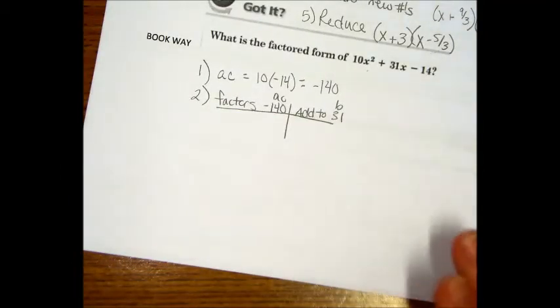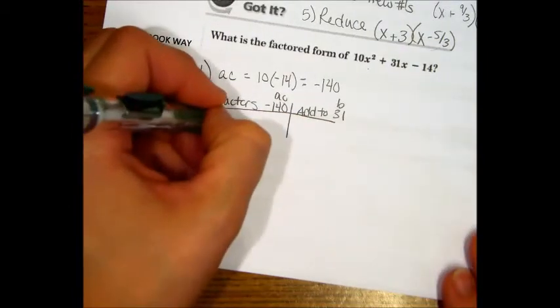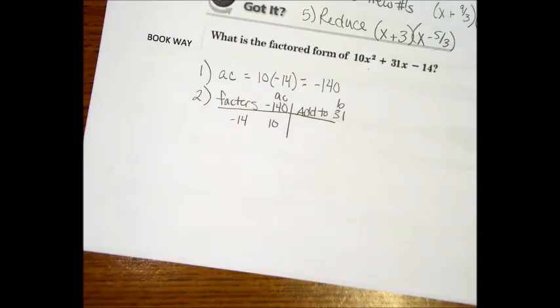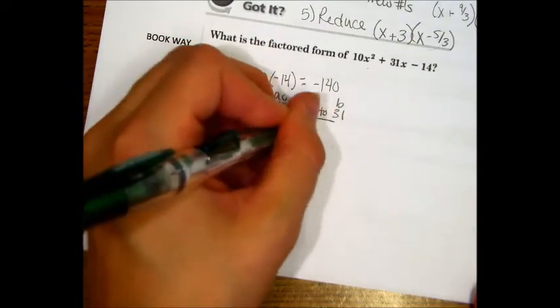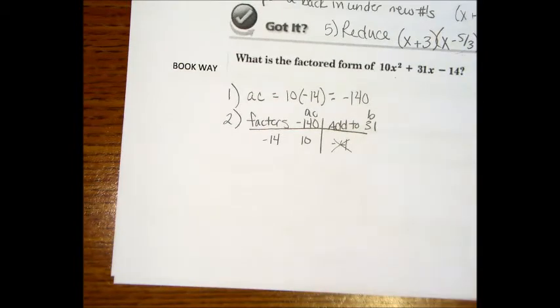Give me two numbers that make negative 140. Well, negative 14 and 10. And what is negative 14 plus 10? Negative 4. And that's certainly not negative 31, is it? Well, it'd be positive 31. Negative 14 and 10 is negative 4, though.